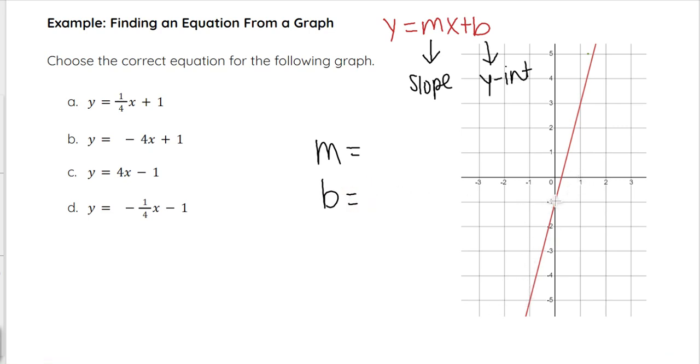I notice here that b is negative 1. And before I do anything else, I'm going to actually cross out some options over here. If I know that b is negative 1, I know that it needs to end in negative 1. So this and this allow me to eliminate options a and b because those show y-intercepts of positive 1, whereas c and d both have negative 1.